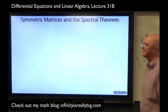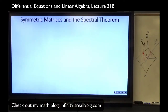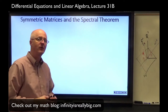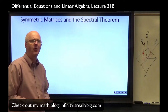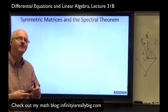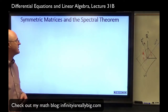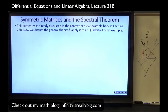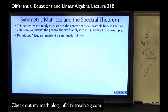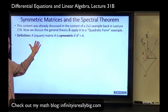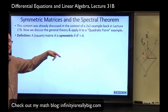Now for the new material: symmetric matrices and the spectral theorem, important for many applications including statistics. We'll apply it to understanding a quadratic form, which is related to differential equations. A symmetric matrix was already discussed in a 2×2 example back in Lecture 27b; now we discuss the general theory. Definition: a matrix A is symmetric if it equals its transpose — such a matrix is necessarily square, n×n.